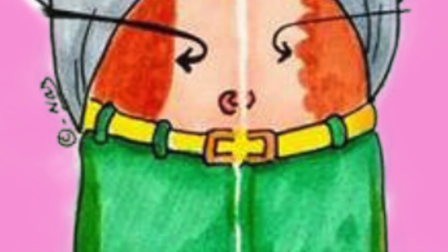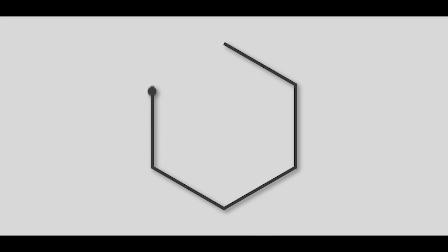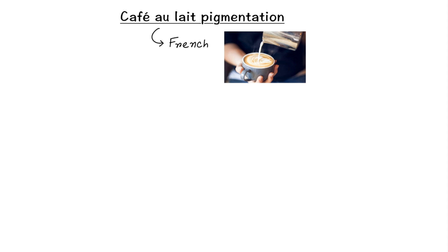Hello everyone, today I have a couple of mnemonics for café-au-lait pigmentation. Café-au-lait pigmentation, or café-au-lait spots, are flat pigmented birthmarks. The name café-au-lait is actually a French word which means coffee with milk, representing the light brown color of the spot.